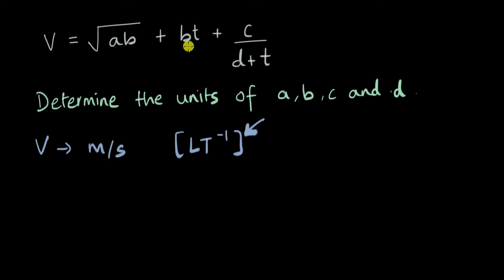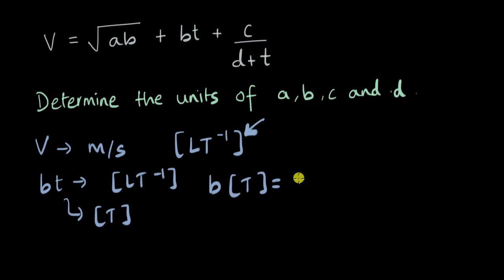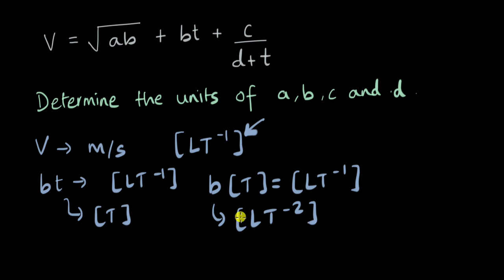Let's pick the term with only one unknown physical quantity. If we pick bt, we know the dimension of t is capital T, and bt must have the dimensions of LT⁻¹. Since t itself has dimension T, the units of b must be LT⁻², because T⁻² multiplied by T¹ gives T⁻¹. So b is LT⁻².